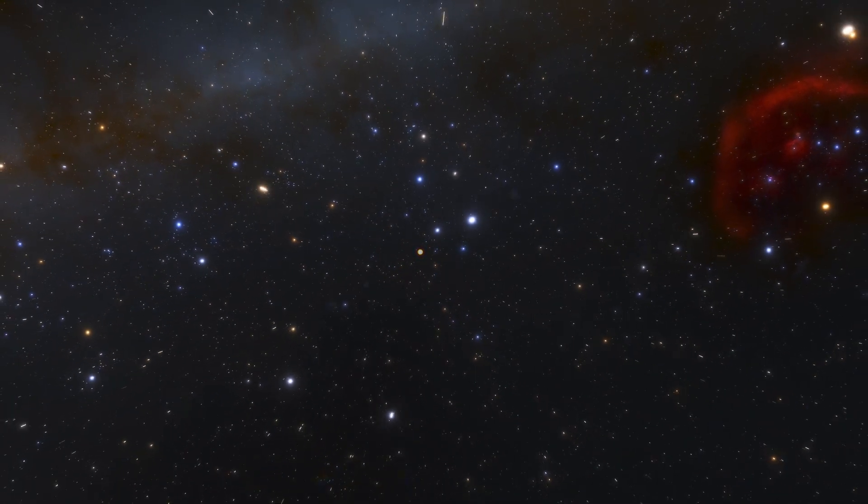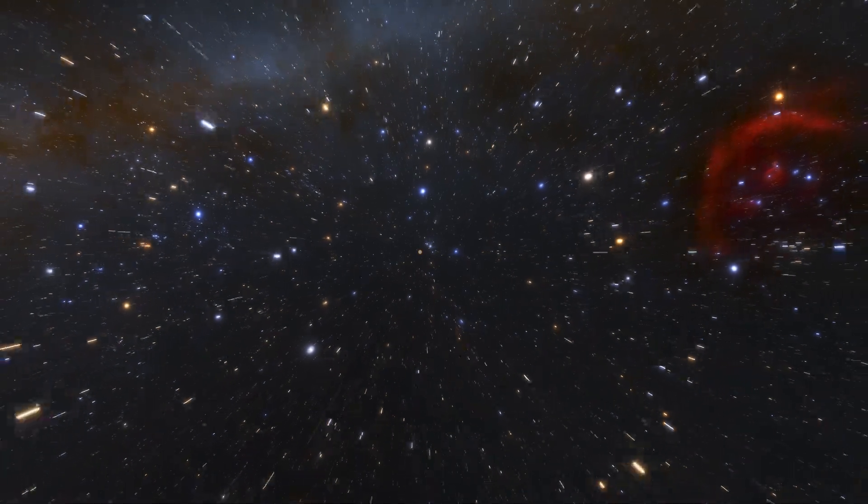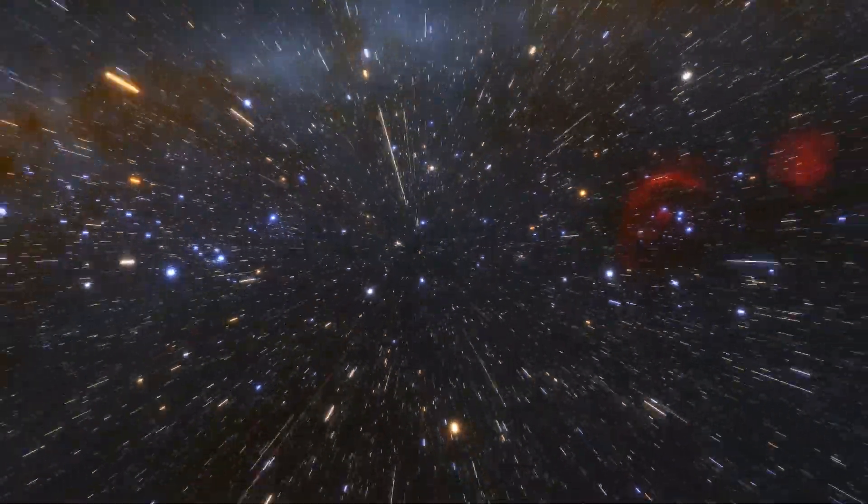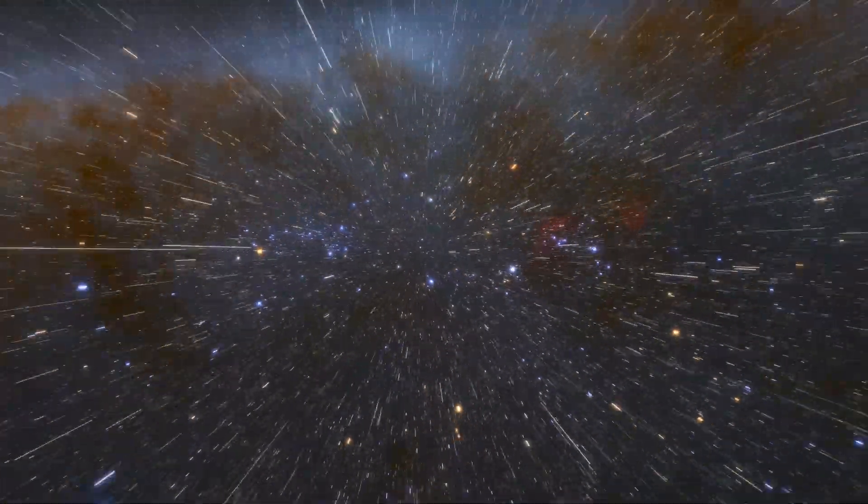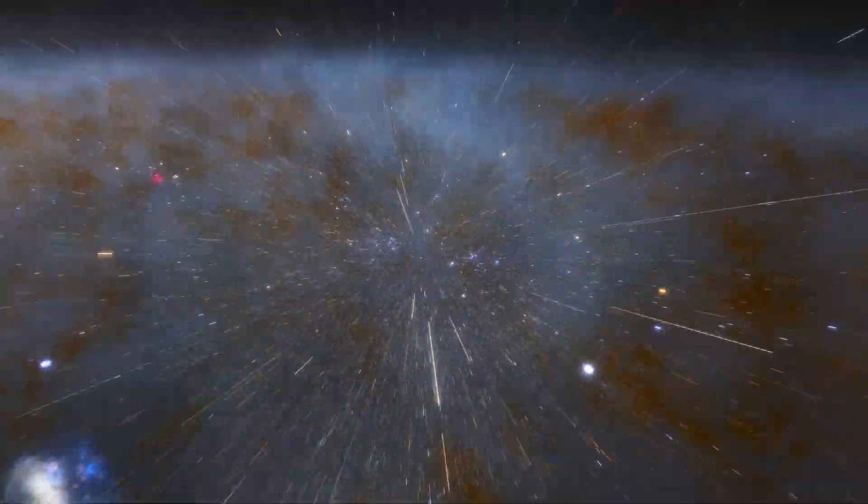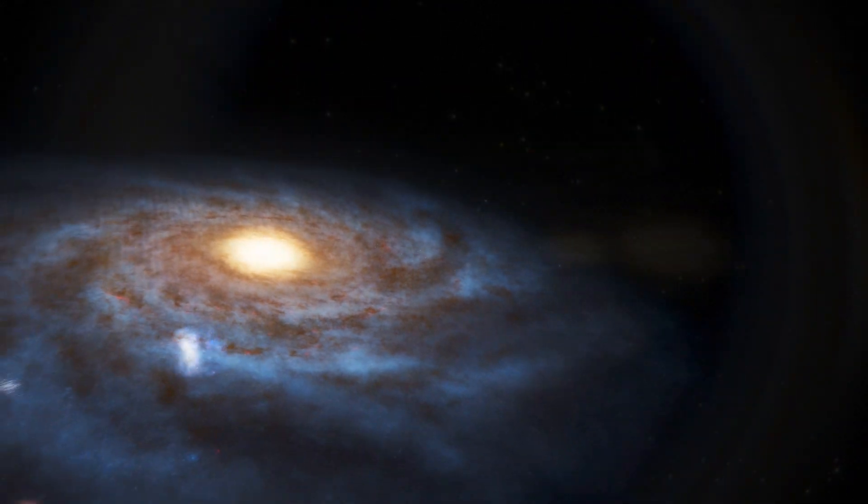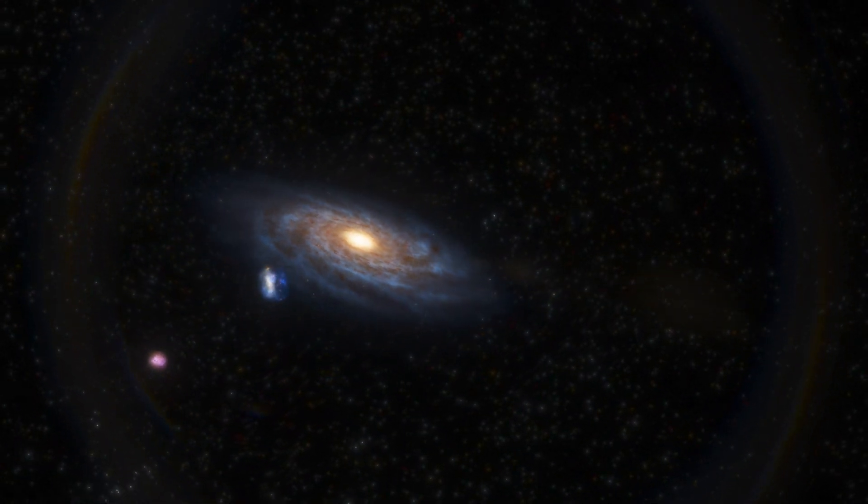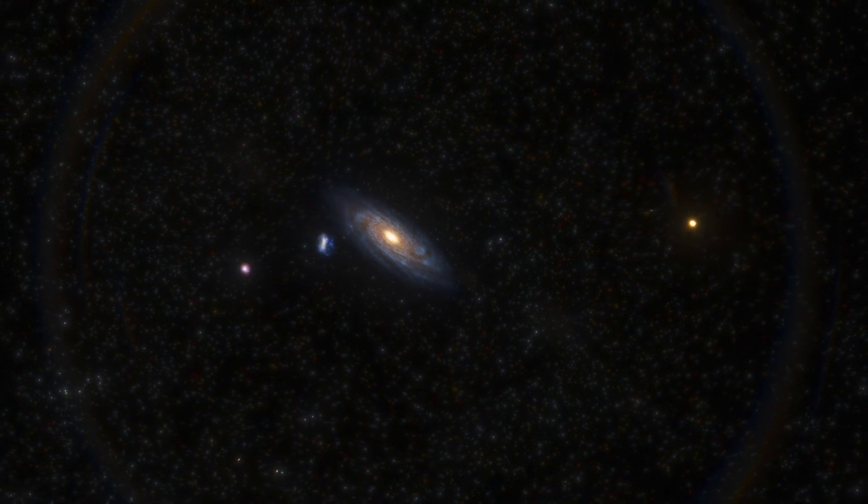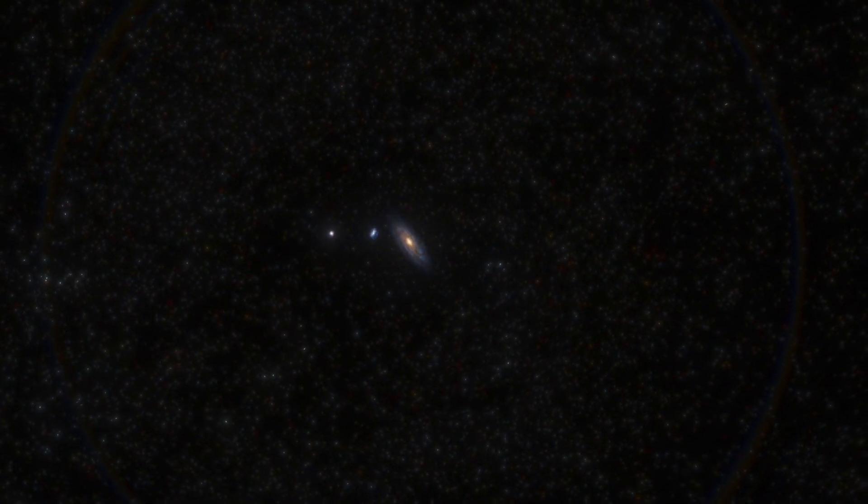It is not until we have many stars in view that we even begin to see that there are large clouds of gas called nebulas that become visible. Continuing to accelerate outward, we see the structure of our own Milky Way galaxy. With its spiral arms encircling a dense nucleus, our field of view is now 100,000 light years.